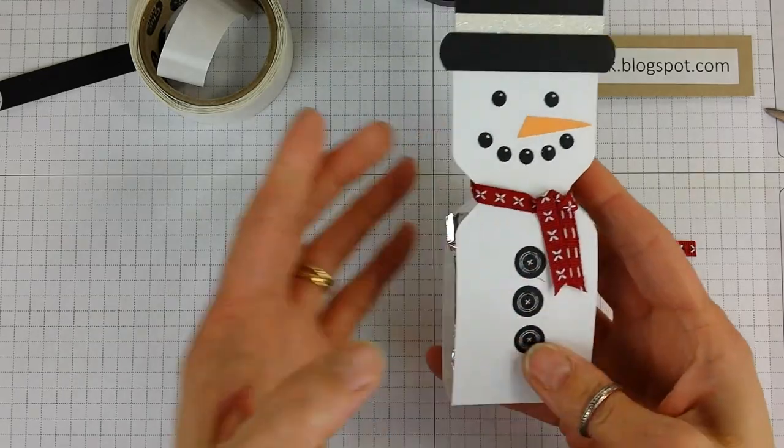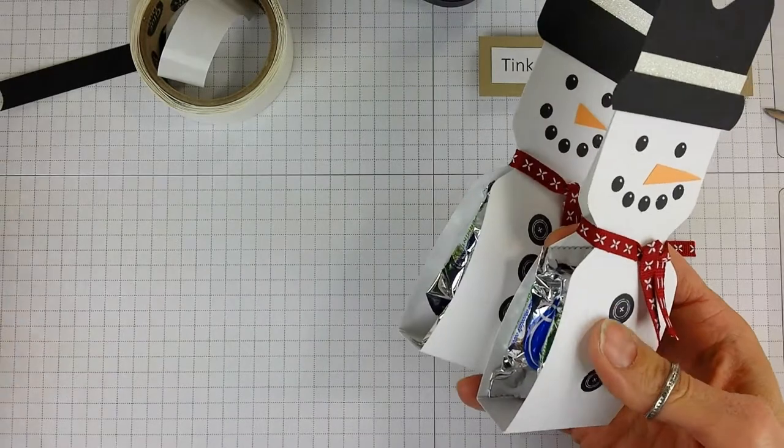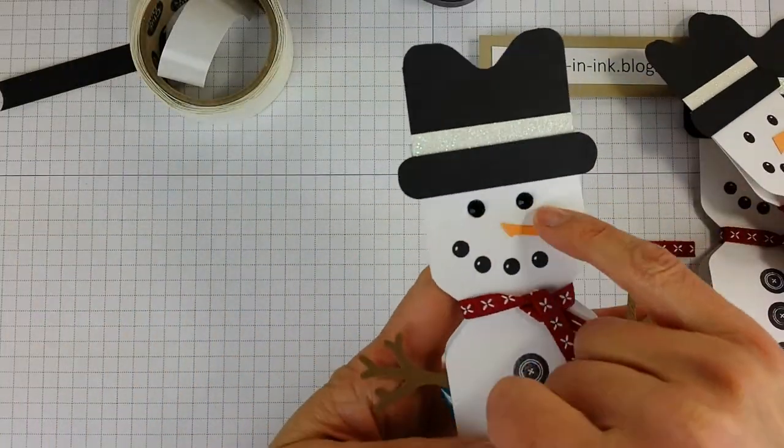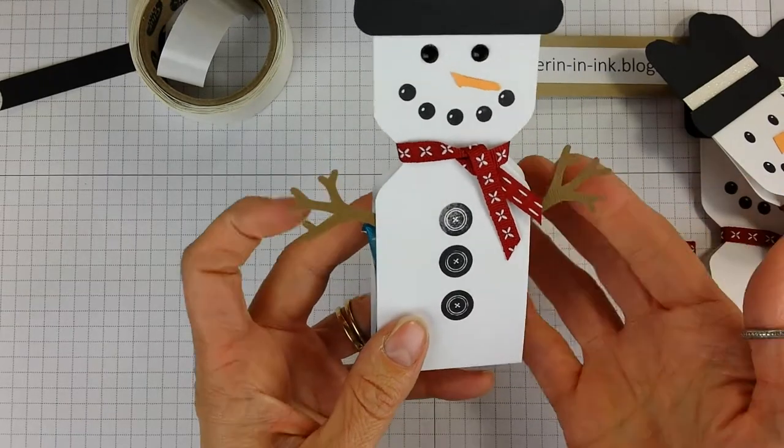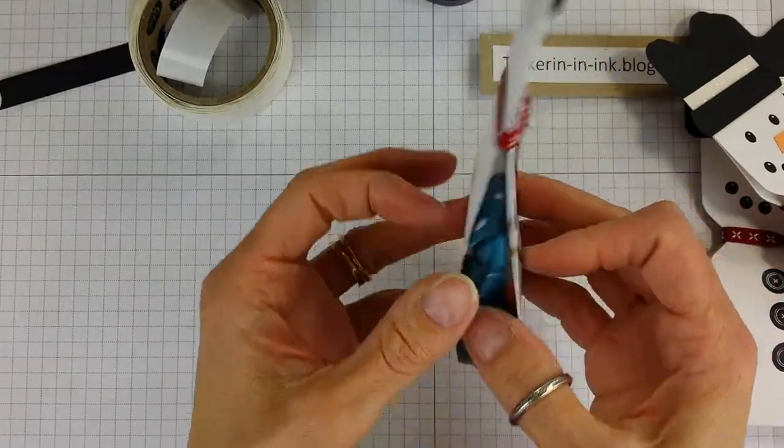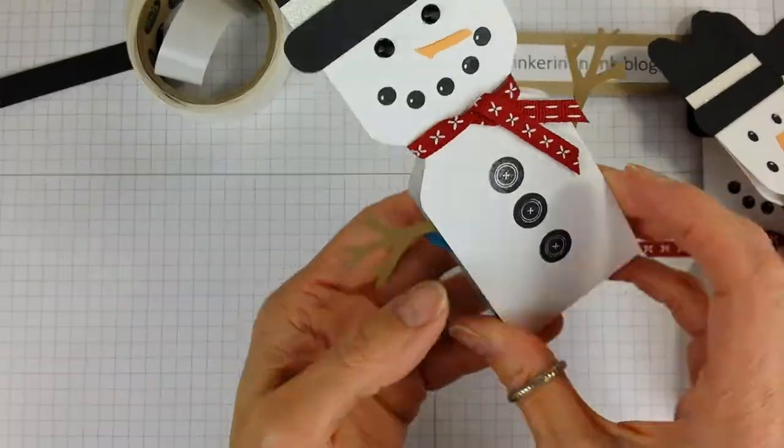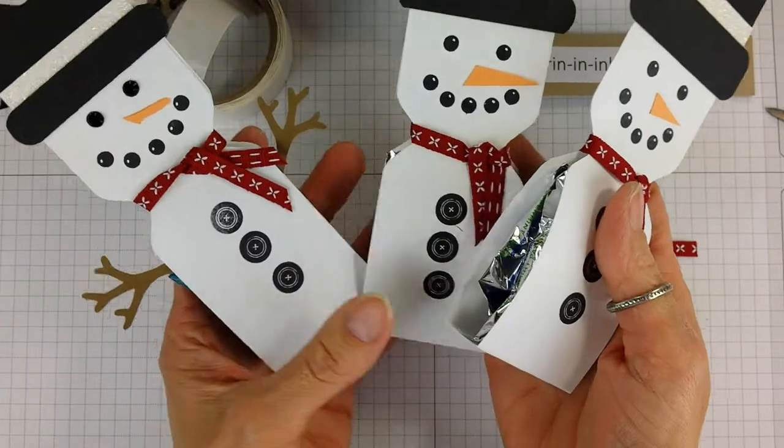And then stick his little nose on and he's done. How's that? It was pretty quick and easy. So here's the first one. And this one uses gems for the eyes. We have the black gems and a retired punch for his arms. And this one holds Reese's cluster. You can put all kinds of goodies in there, Ghirardelli's, all kinds of things.